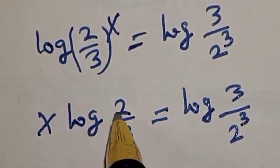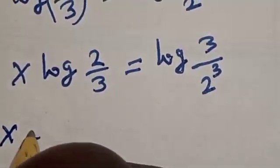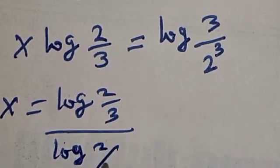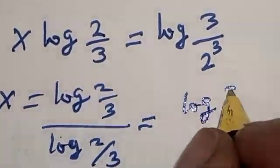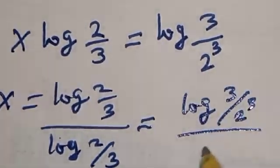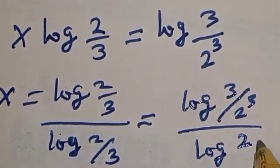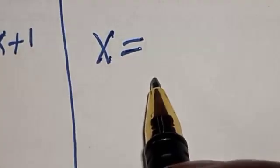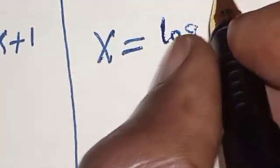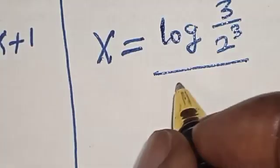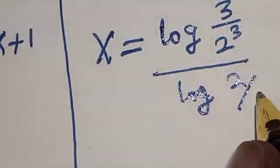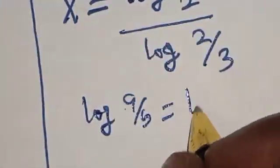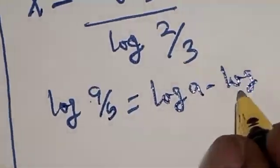Now let's divide both sides by log(2 over 3). So s is equal to log(3 over 2) raised to the power 3, divided by log(2 over 3). Take note that log(A over B) equals log A minus log B.